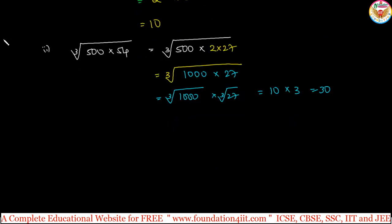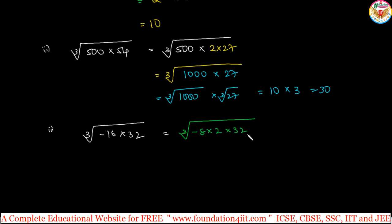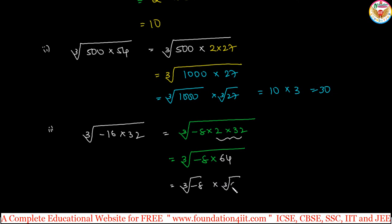Even if we have negative numbers, for example, cube root of minus 16 into 32. Here, minus 16 and 32 are not perfect cubes. So we write minus 16 as minus 8 into 2, and 2 into 32 is 64. So cube root of minus 8 multiplied by cube root of 64. Cube root of minus 8 is minus 2, cube root of 64 is 4, because 4×4×4 is 64. So the answer is minus 8.